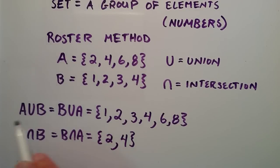So basically, A union B is the set that contains the elements 1, 2, 3, 4, 6, and 8. And A intersect B is the set that contains the elements 2 and 4.